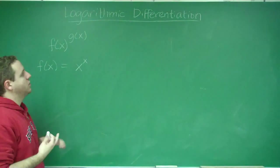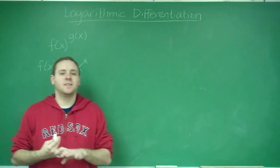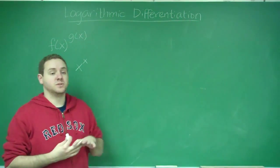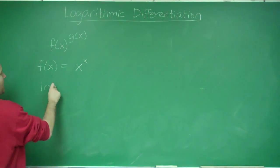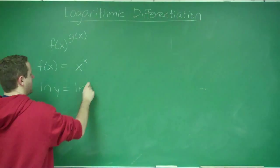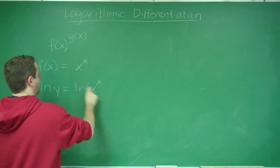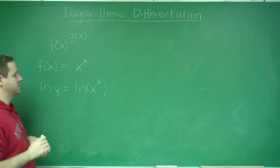The method for logarithmic differentiation is you have to take the ln of both sides first. So let's call this y instead of f(x). We'll get that ln y is equal to the ln of x to the x.